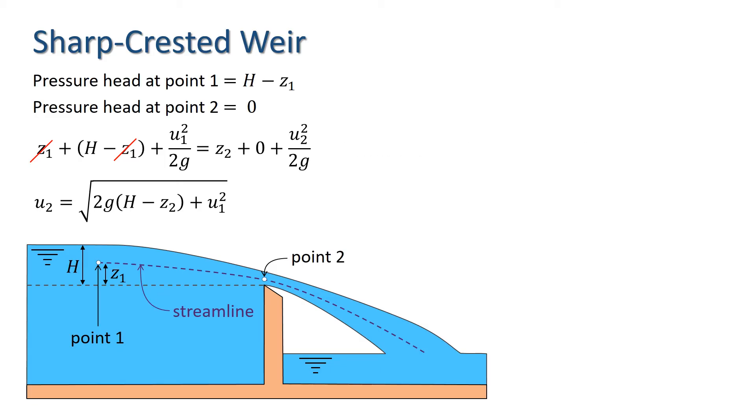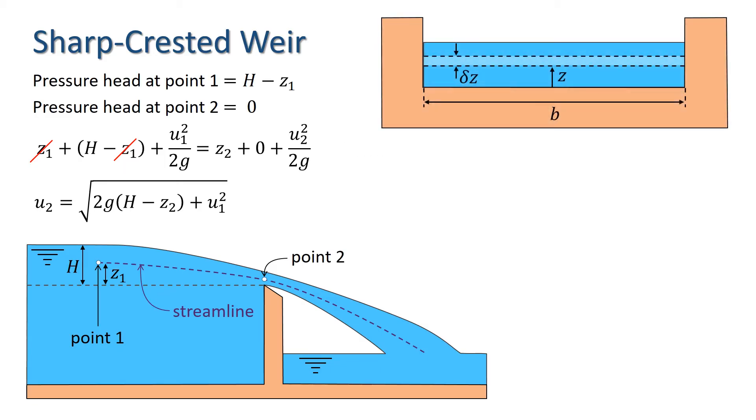Let's take a closer look at what's happening above the crest, and consider an elementary area of height delta Z, a distance Z above the crest as shown in the diagram. Discharge is area times average velocity, so the discharge through the elementary area will be B delta Z times the velocity U2, giving us the expression shown here.